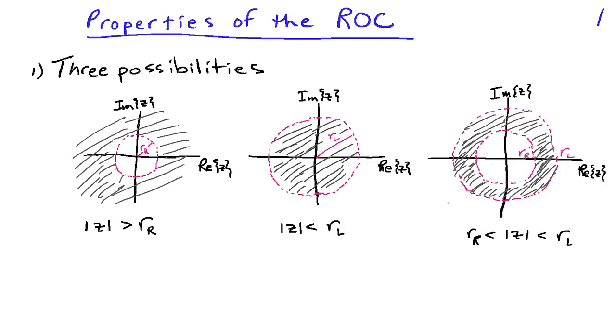We've seen that there's three possibilities for the region of convergence. It can lie exterior to a circle of radius r sub r. It can lie interior to a circle, and we had the interior of the circle when we were looking at the non-causal or anti-causal exponential sequence. And it can lie in a ring. When we had a signal that extended to the right and to the left, exponential in both directions, we had an example of the ring.